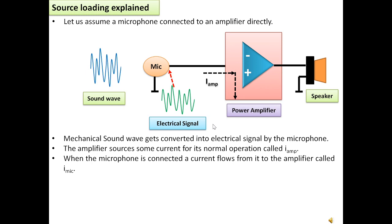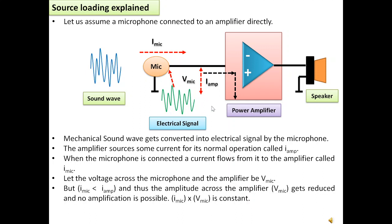When the microphone is connected, a current flows from it to the amplifier called i-mic. Let the voltage that appears across the microphone and the amplifier be v-mic. But in reality, current from the microphone is very very less compared to the current required for the amplifier. So i-mic is less than i-amp and thus the signal provided by the microphone to the input of the amplifier may get reduced and no amplification is possible at the output.